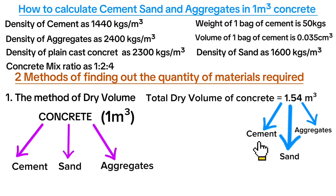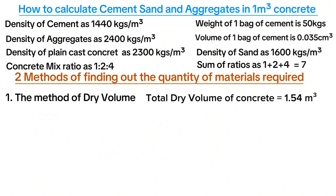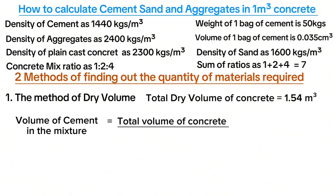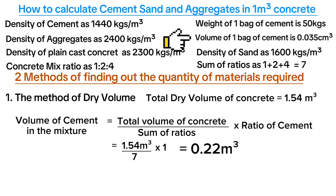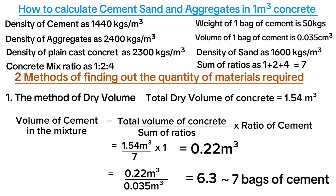The sum of ratios equals 1 + 2 + 4 = 7. Volume of cement in the mixture equals dry volume divided by sum of ratios, multiplied by the cement ratio: 1.54 ÷ 7 × 1 = 0.22 cubic meters. Number of bags of cement required equals volume of cement divided by volume of one bag: 0.22 ÷ 0.035 = 6.3, which is equivalent to 7 bags of cement.